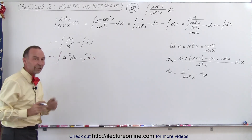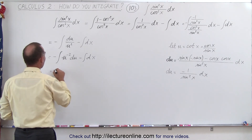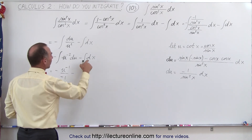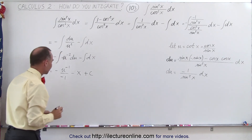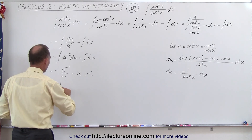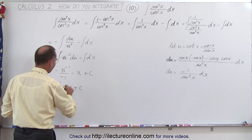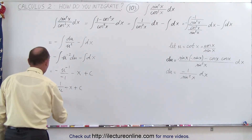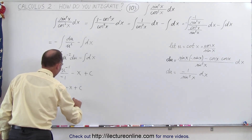Now we can go ahead and integrate. This becomes u to the minus 1 divided by the new exponent, so it equals negative u to the minus 1 divided by negative 1, minus the integral of dx which equals x, plus a constant of integration. The two negatives cancel, so this becomes 1 over u minus x plus c. Since u equals the cotangent of x, this is 1 over the cotangent of x minus x plus c.